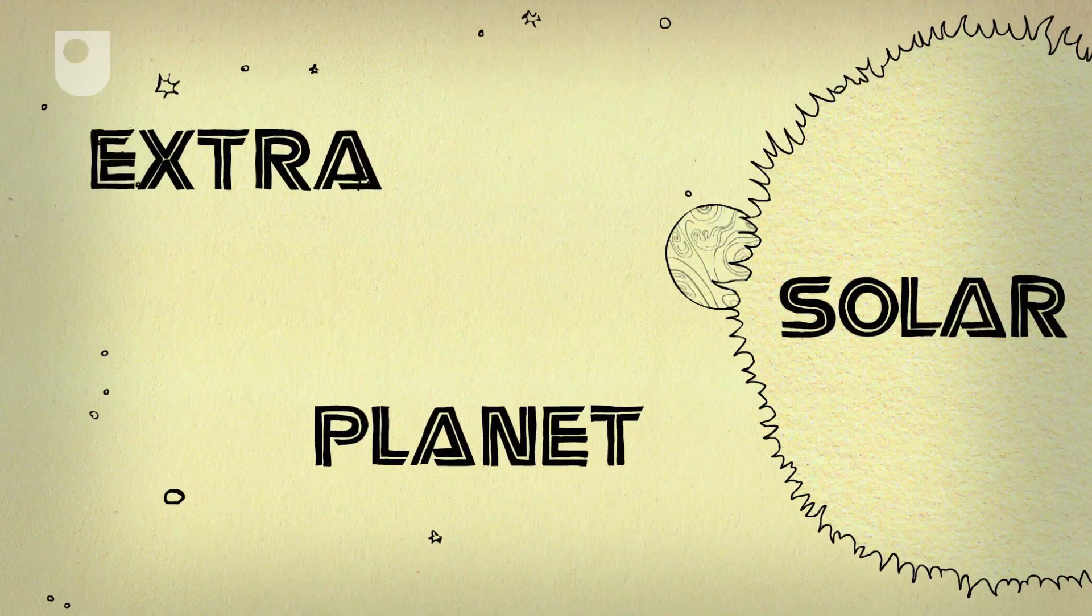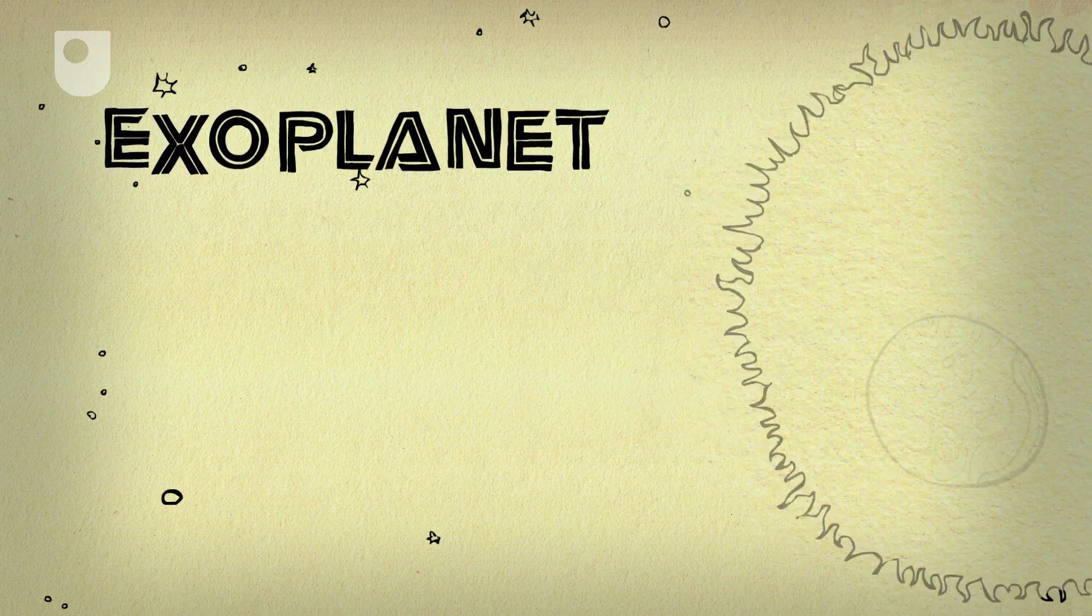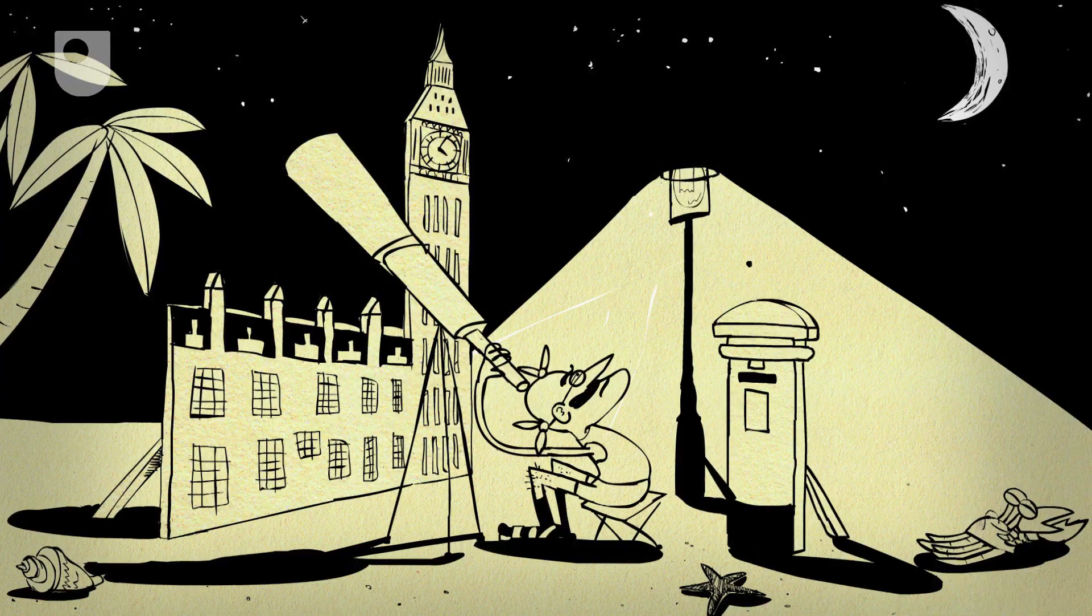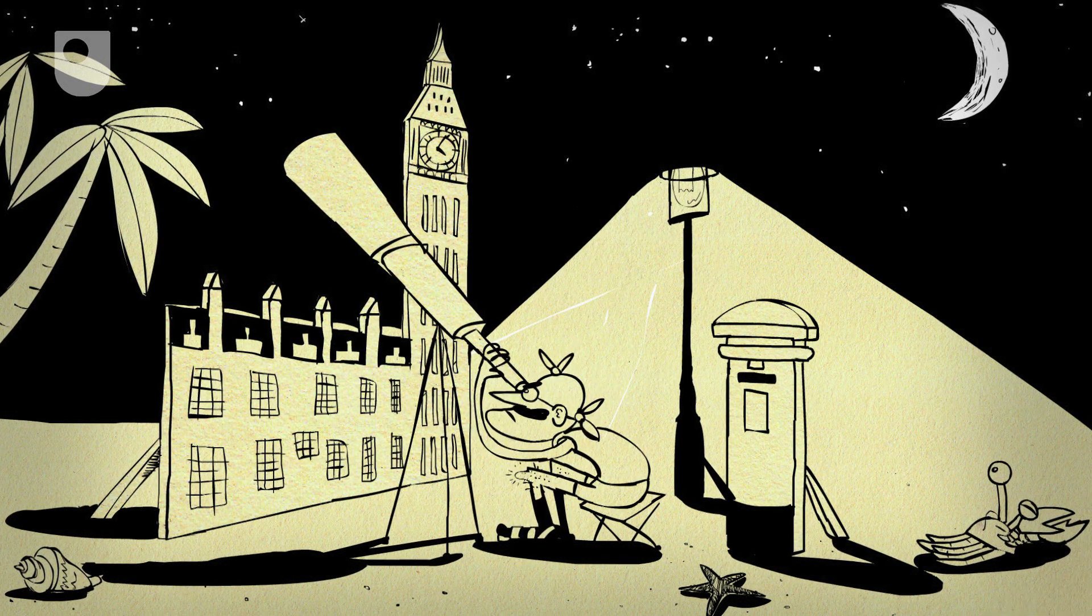But planets outside our solar system, known as exoplanets, are difficult to spot because they get lost in the glare from the star they orbit, like a mosquito flying around a street lamp. So how do you see something that's effectively invisible?